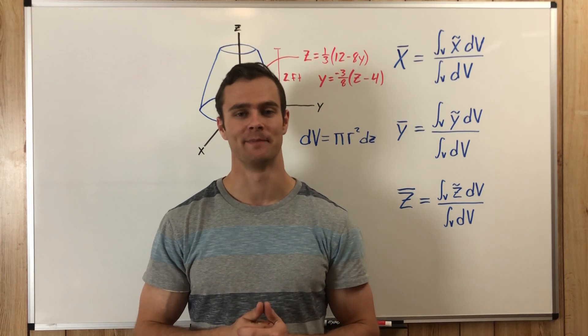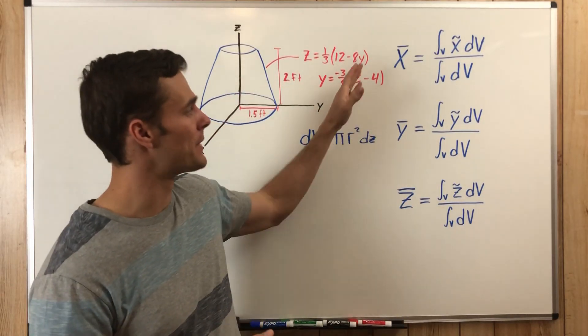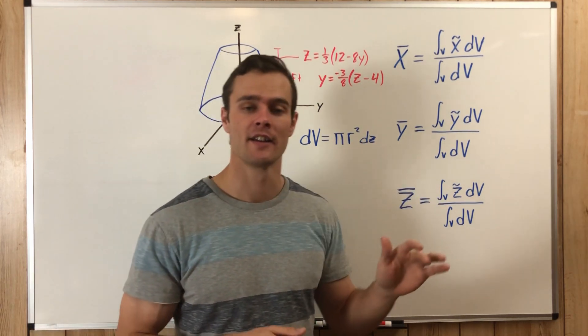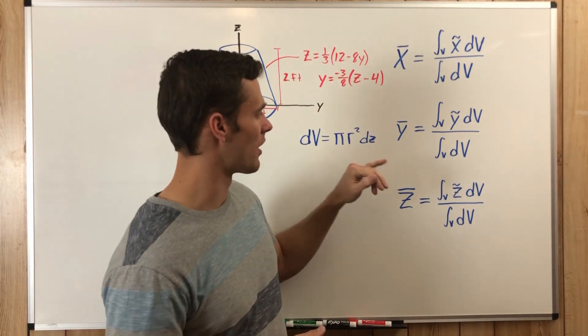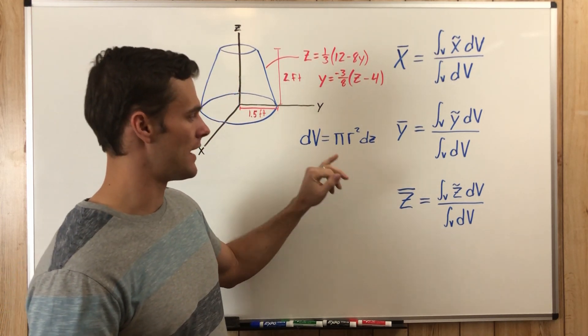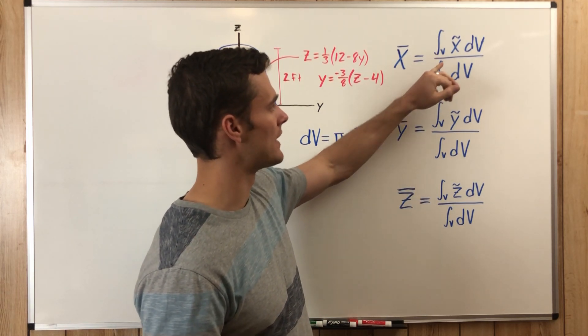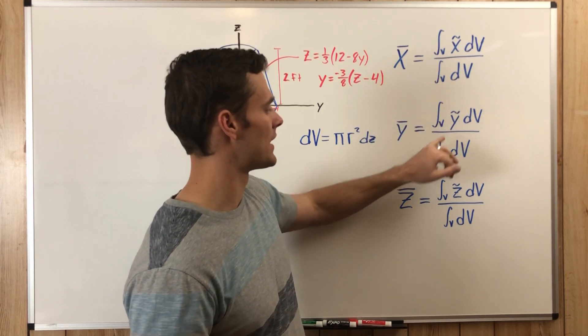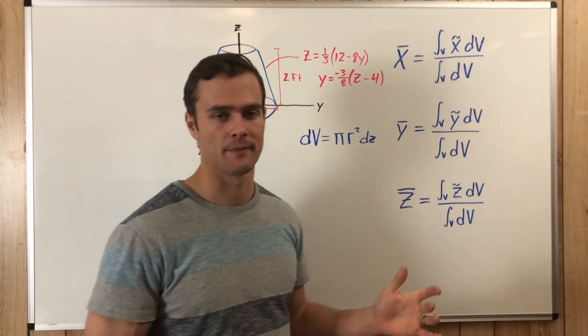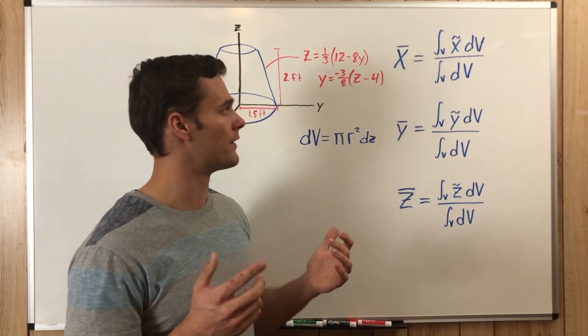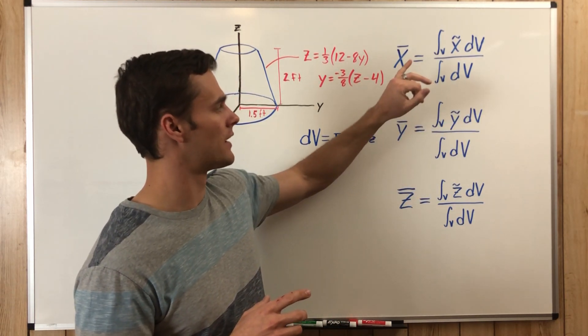These equations might look familiar to you if you already know how to find the centroid of a line or the centroid of an area. But if you don't, X̄, Ȳ, and Z̄ are the coordinates of the center of mass of an object. They're all pretty much the same, except that each one has their X̃, Ỹ, or Z̃, or that X, Y, and Z with a little squiggly line over the top. Those are the centroid of your differential volume that we'll be talking about, and so each one has its own different variable in there.